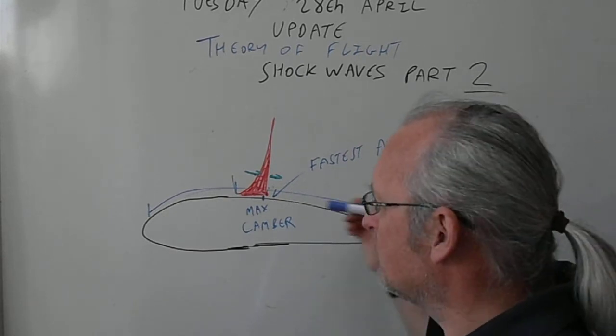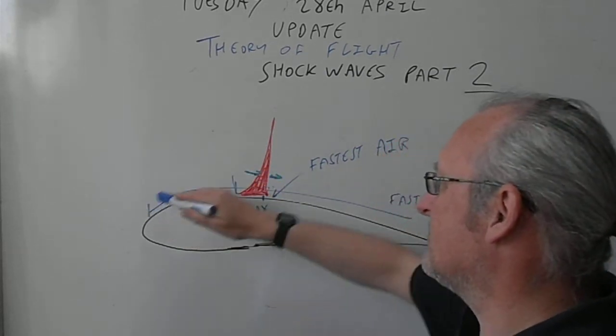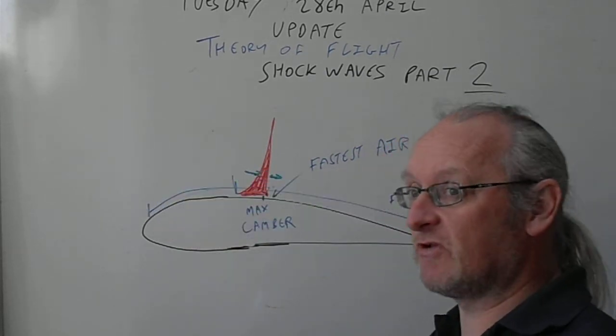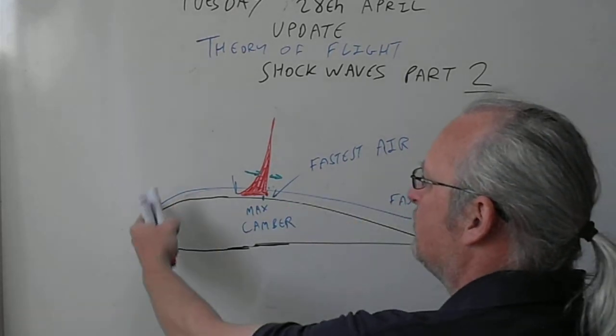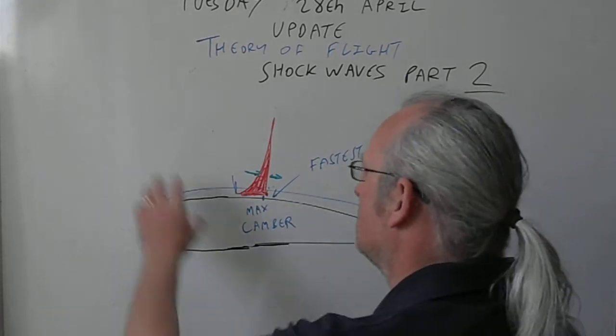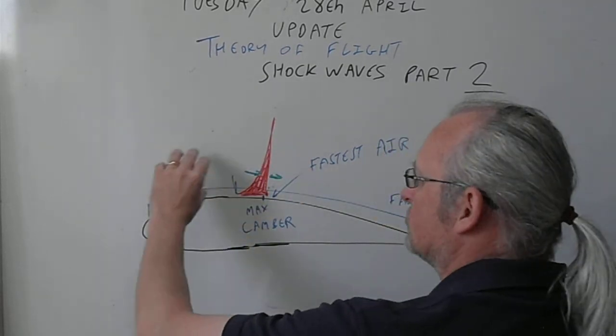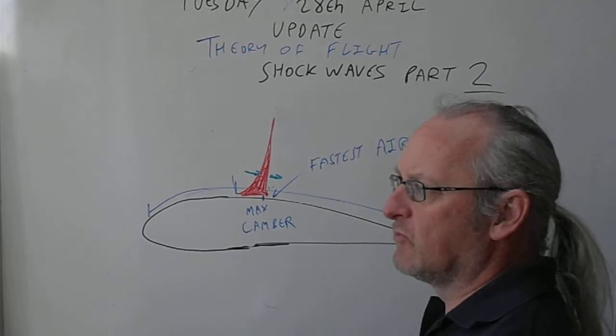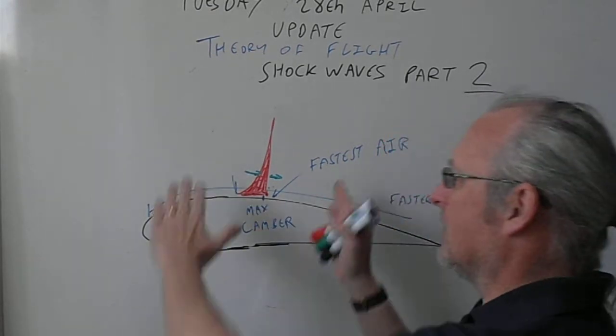So what we're seeing is as the wing moves forward it accelerates air, and as it accelerates air it does accelerate air faster than the speed of sound. So that air is being pushed over the wing and it kind of gets constricted and it accelerates as it gets constricted and it goes faster than the speed of sound momentarily.